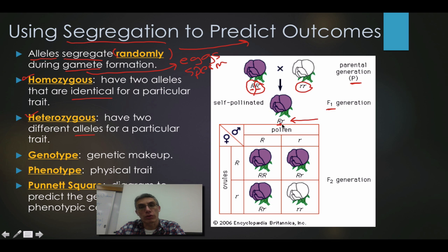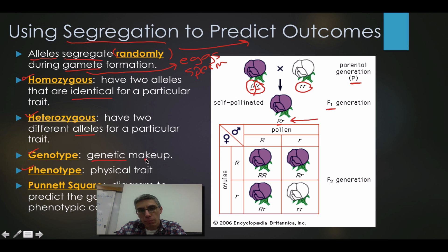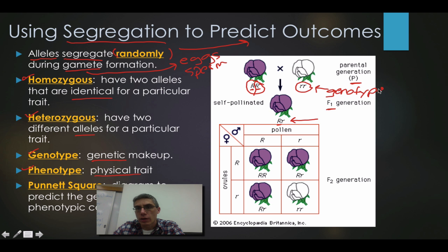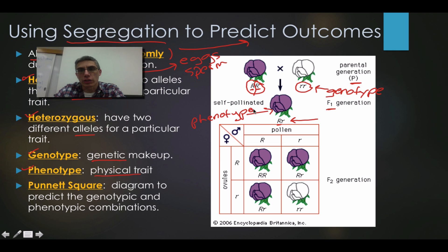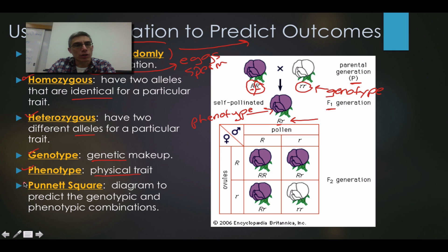In the heterozygous state, we have a capital R and a lowercase r — two alleles that are different from each other. Remember, they are the same gene — they both code for the color of the flowers — but they're different varieties of that gene. A couple of other terms we need to look at are genotype and phenotype. Genotype is going to be the genetic makeup of that particular organism, and phenotype is going to be the physical trait that you would actually observe. A Punnett square is simply a tool or a diagram used to predict the genotypic and phenotypic combinations from the particular cross that we do.